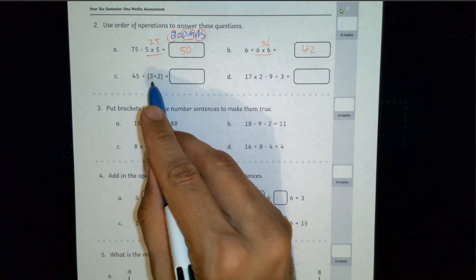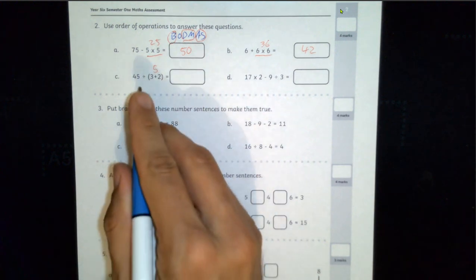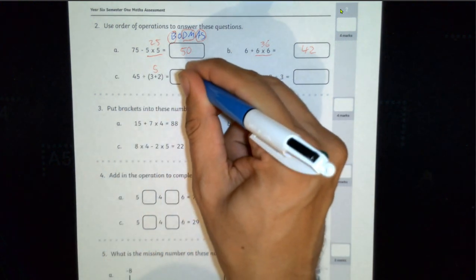Here we do have a bracket, so brackets has to come first. 3 plus 2 is 5, 45 divided by 5, you know your times tables, that is 9.